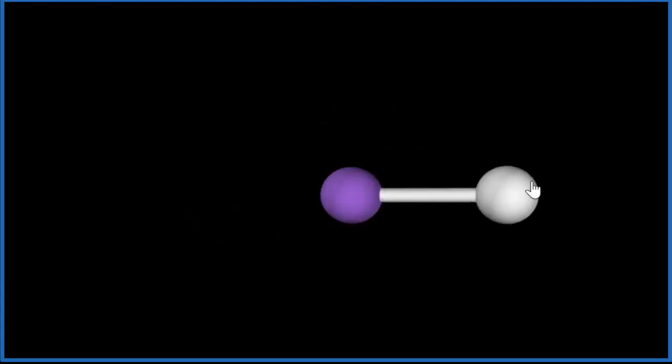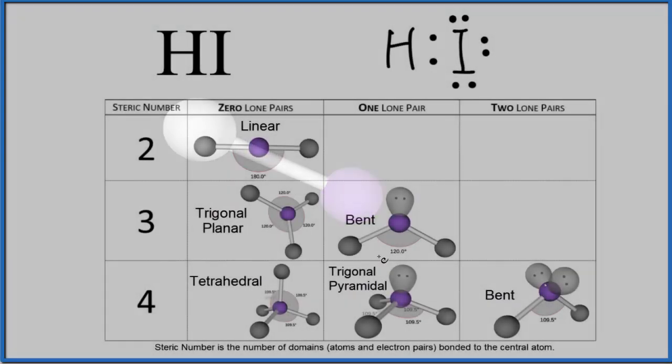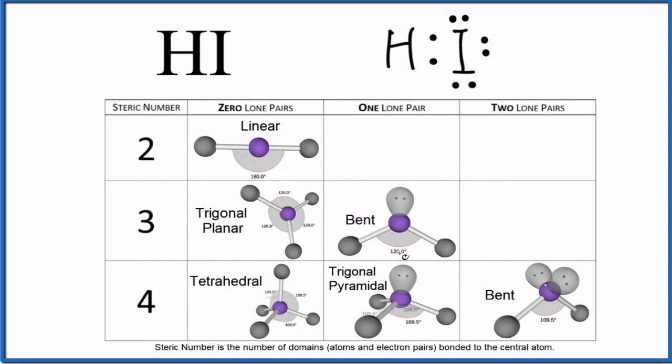So let's go back to our Lewis structure. So in this case our chart isn't that useful, and this is the same case for HCl or HBr or HF. It's just going to be two atoms there, it's going to be linear.